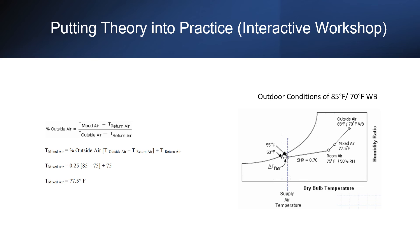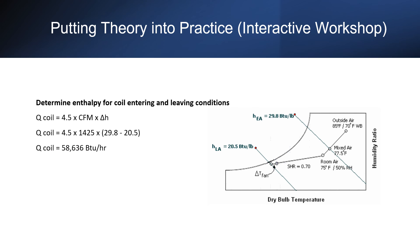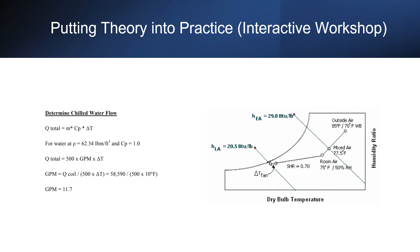Locate the mixed air condition and account for fan delta T. Assuming perfect mixing occurs, the mixed air conditions can be found using this equation. On the psychrometric chart, plot the enthalpy for coil entering and leaving conditions, and from the following formula, calculate the coil cooling load. The last step is to calculate the chilled water flow through the coil. Since we know the cooling requirement and delta T across the coil, we can simply use the following formula to calculate the required flow.